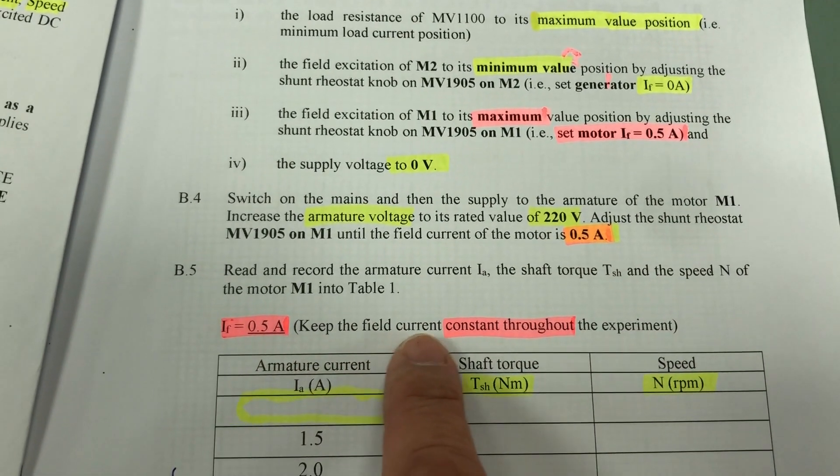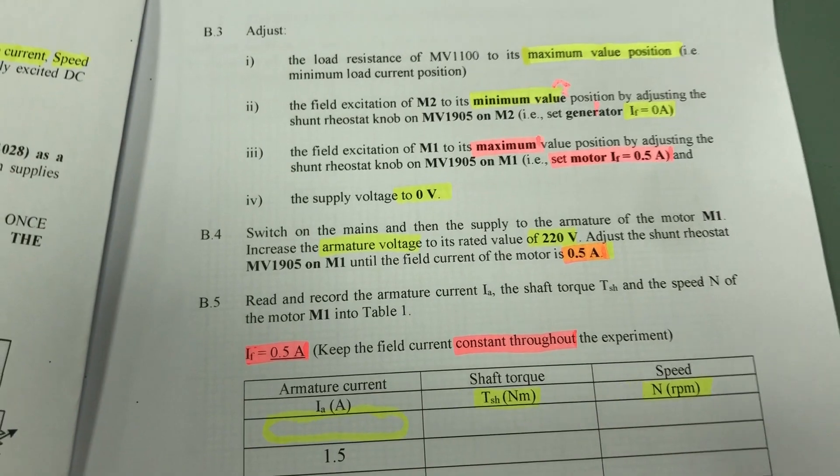0.55 is rated. But in this experiment, we set at 0.5. Throughout, we will keep the field current constant throughout. Mr. Tan is going to turn on the supply.